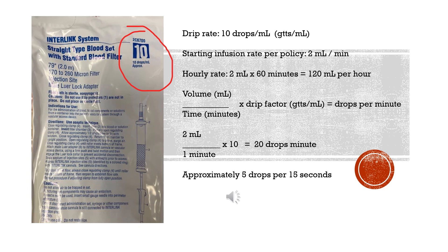If you look at the upper right hand corner of your blood transfusion tube, you'll see the drip rate. In this case, the tubing that we use here is a drip rate of 10 drops per ml. So that is going to be our drip rate, 10 drops per ml, and our starting infusion per policy is 2 mls per minute.